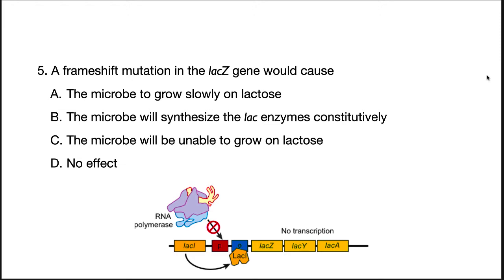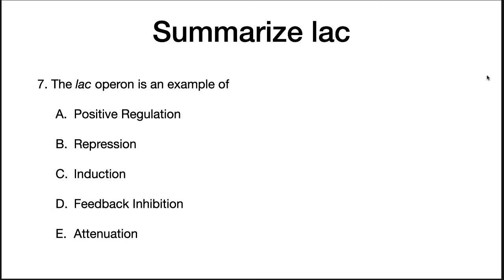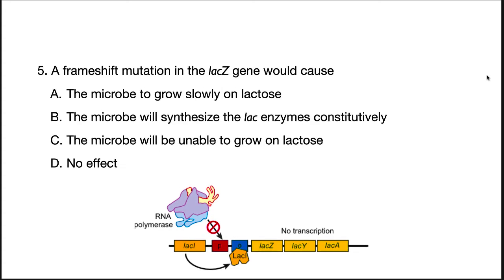Here is the first question. A frameshift mutation in LACZ would cause... Here is the second question. There are mutations that can be isolated that will cause the LAC repressor to not bind its allosteric effector molecule allolactose. Such a mutation would cause... The LAC operon is an example of... And finally, a mutation that inactivates the repressor LACI would cause...